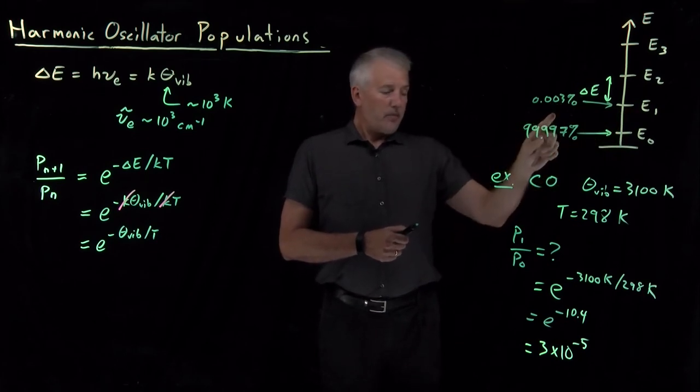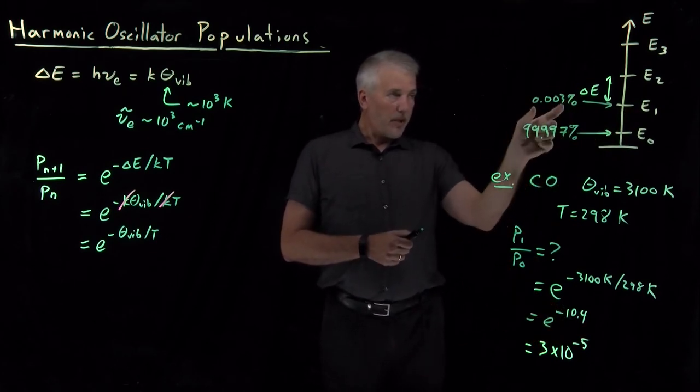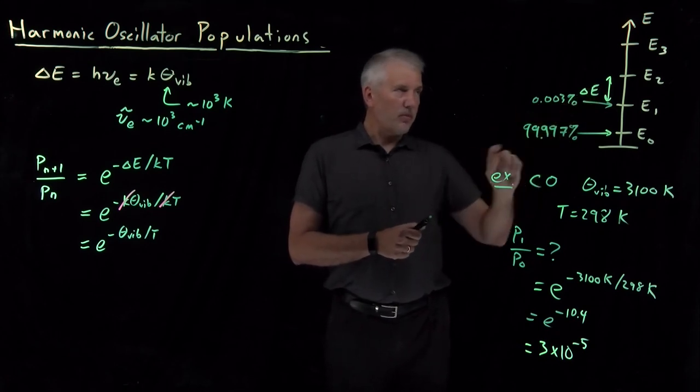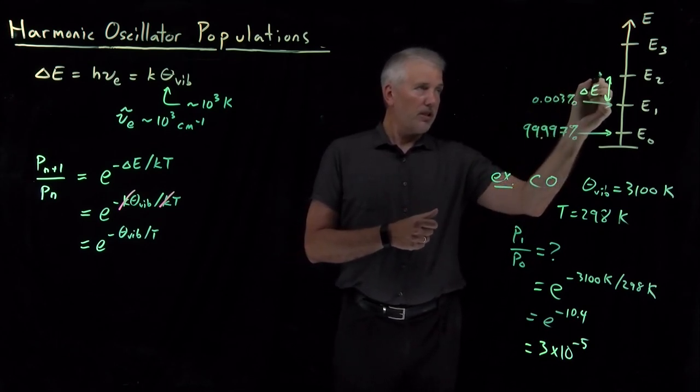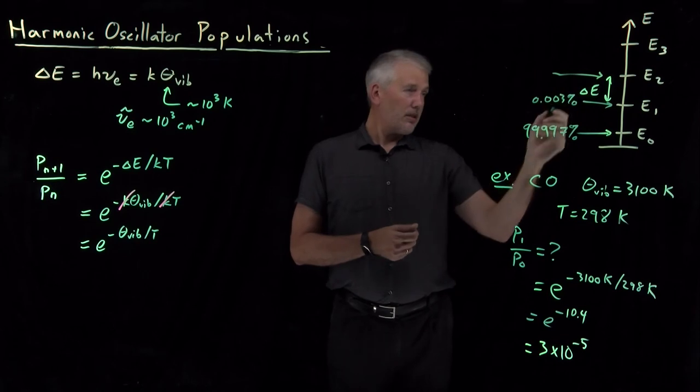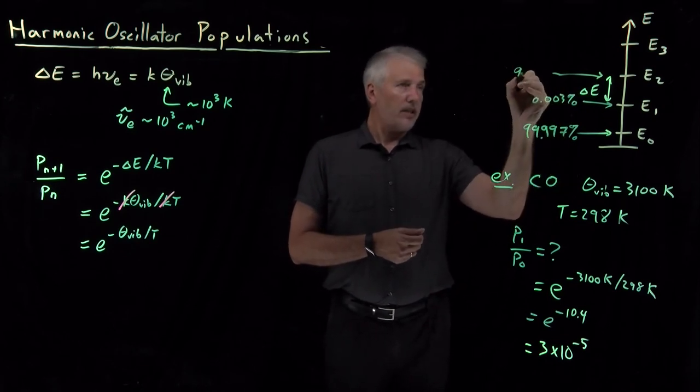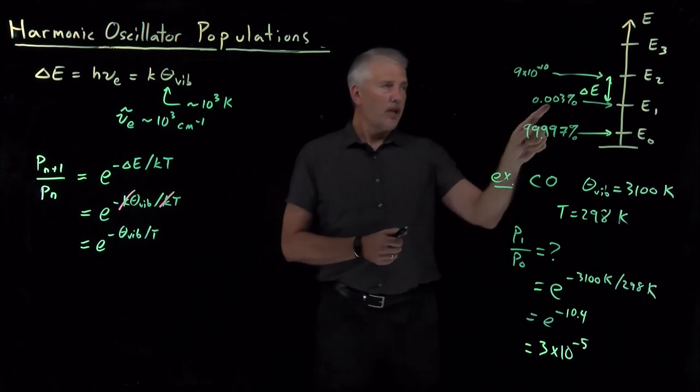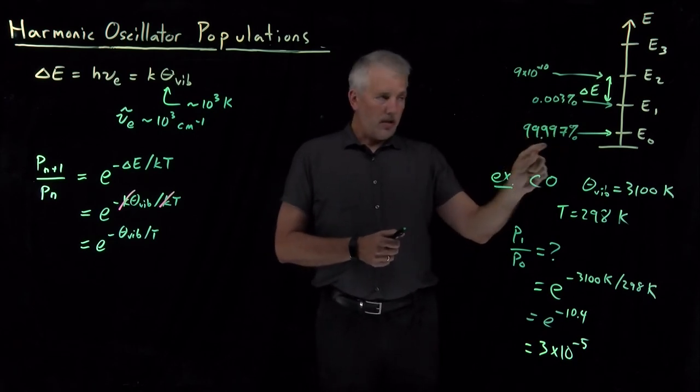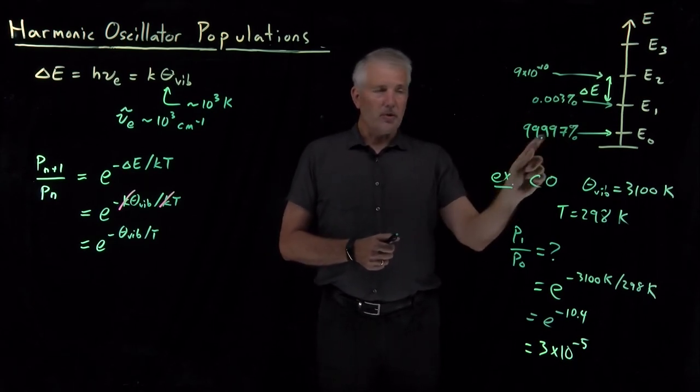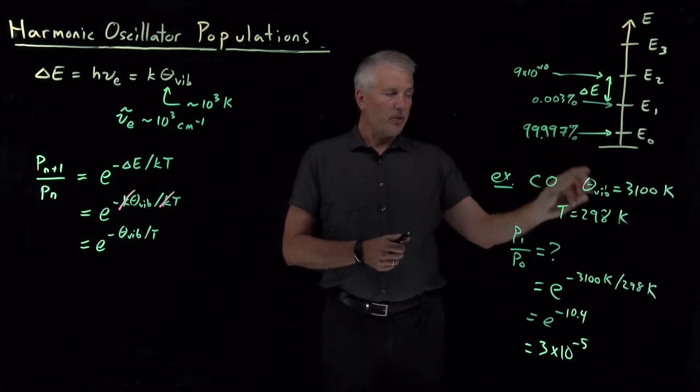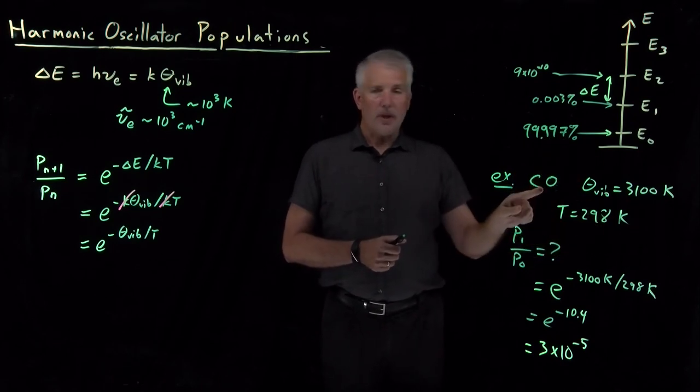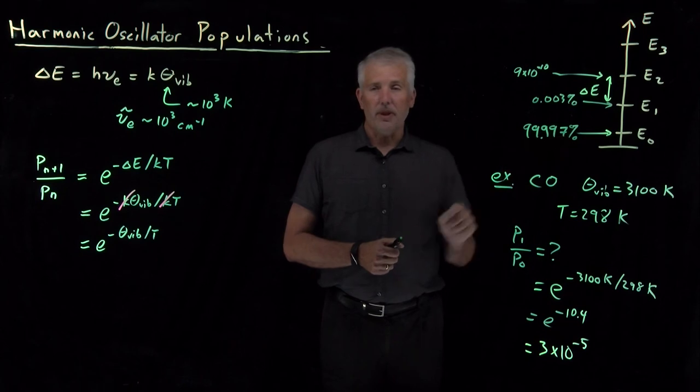An even smaller factor, that number squared, 3 times 10 to the minus 5 of this number, so something like 9 times 10 to the minus 10 as the fraction of molecules occupy this state. So a very large majority of the molecules, 99.997% of the molecules at room temperature for a carbon monoxide molecule, are in the ground vibrational state.